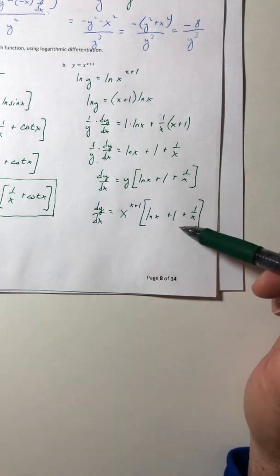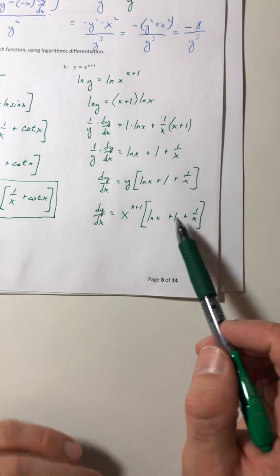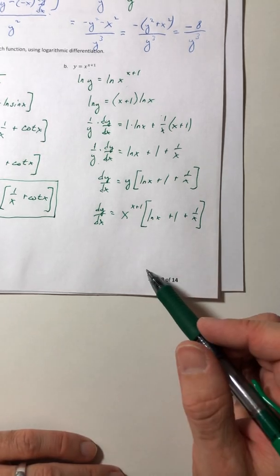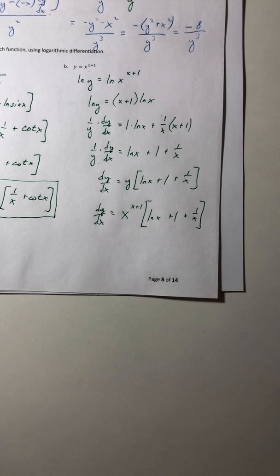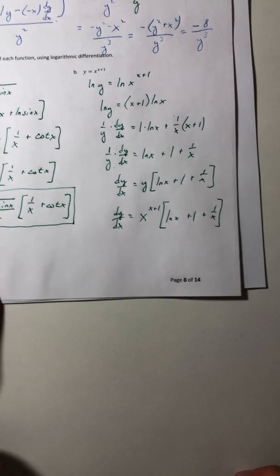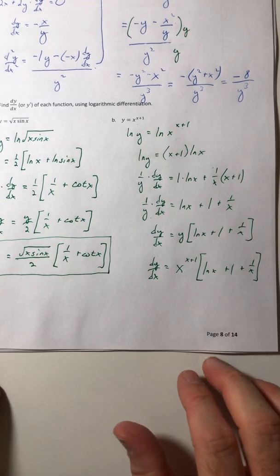And you can leave this the way it is. You can distribute this across, kind of up to you as to what you want to do with it. All right. That is going to conclude section 3.5 and implicit differentiation. So try the homework problems and email me if you have any questions.